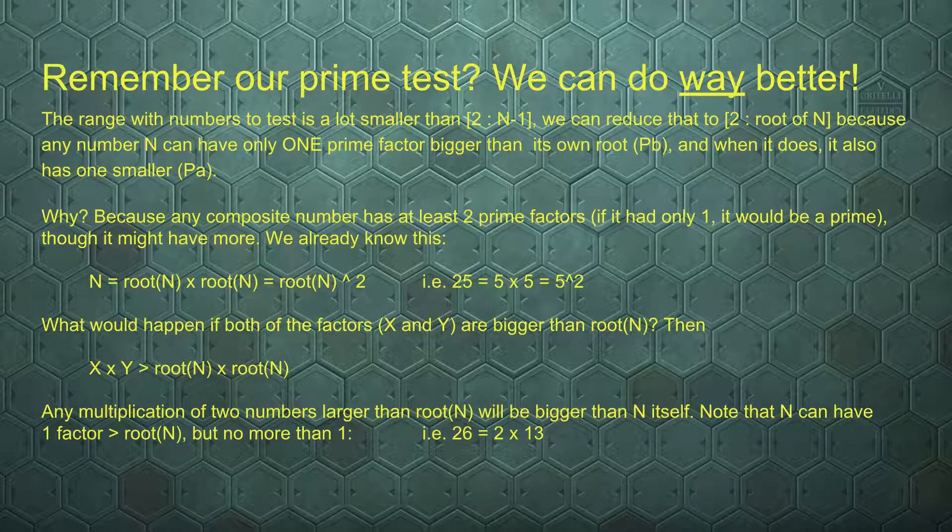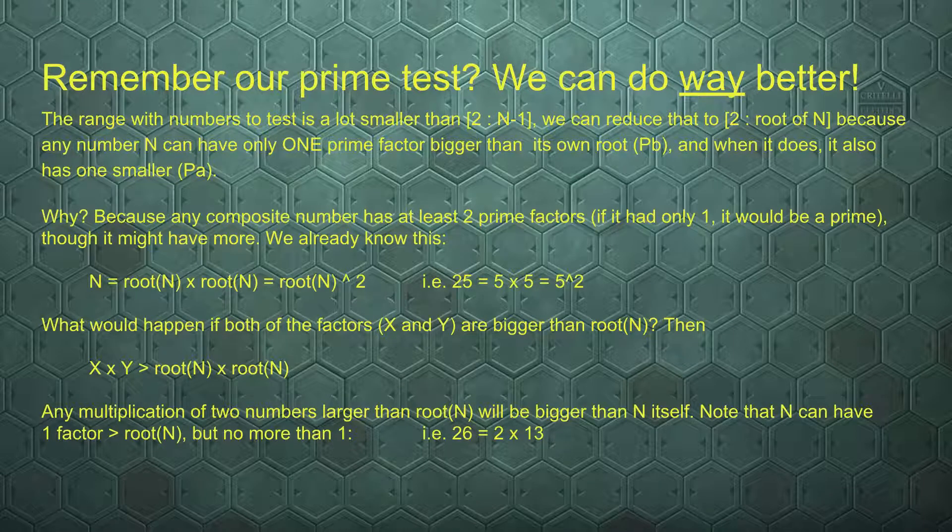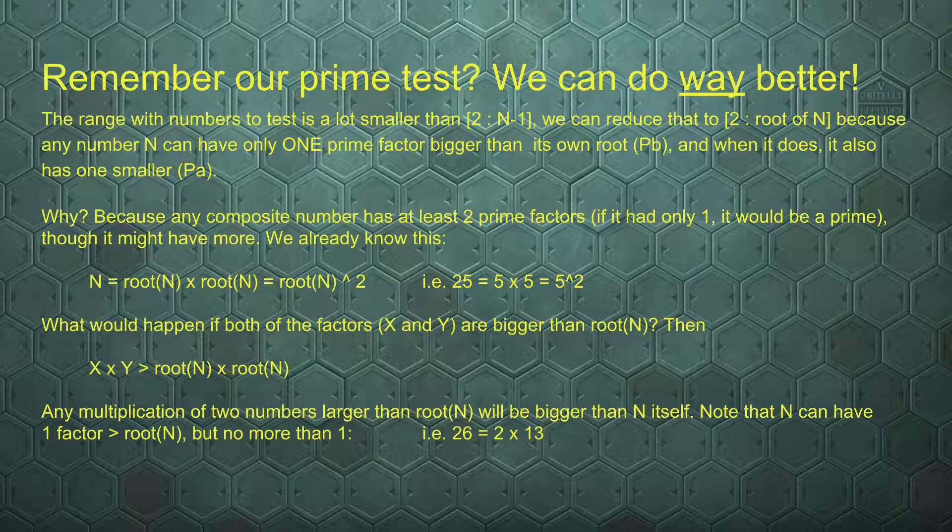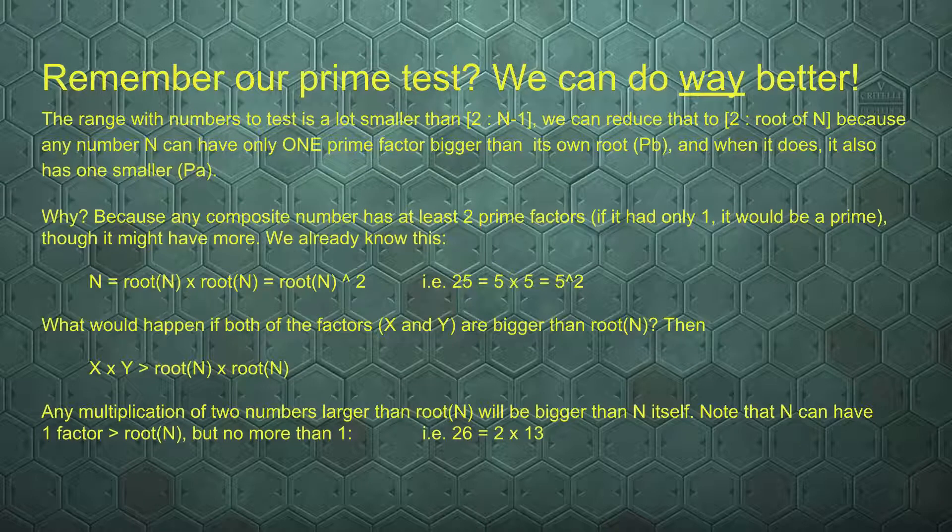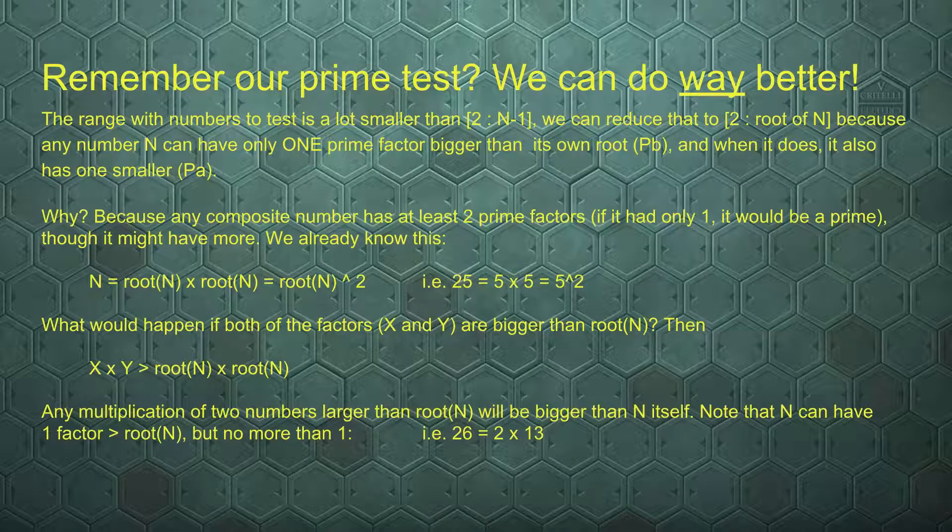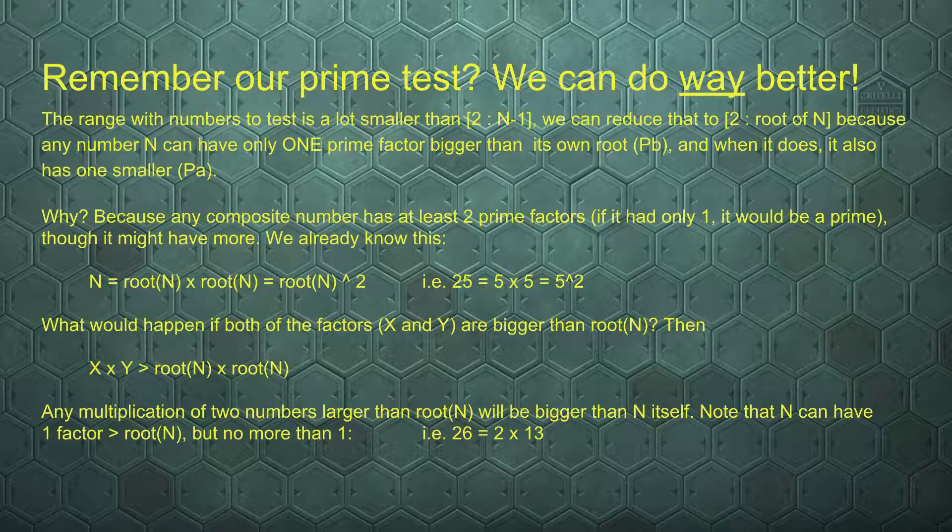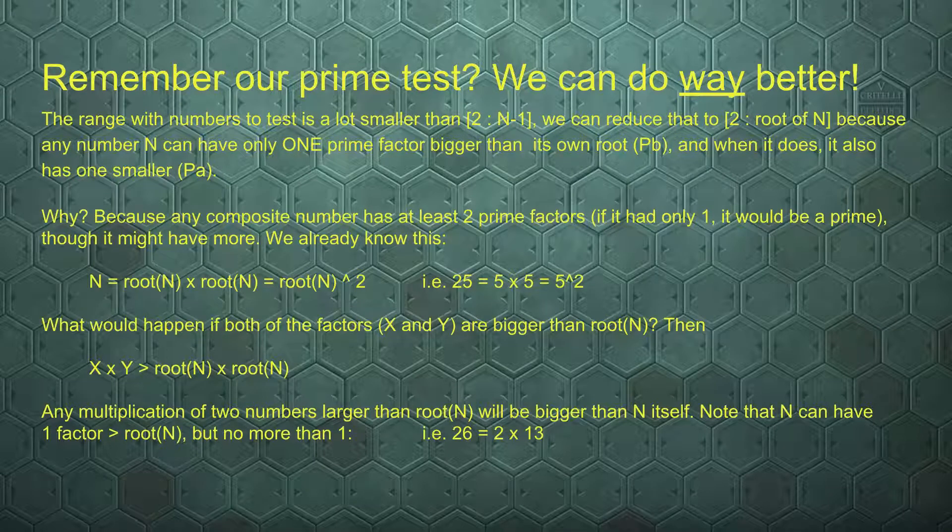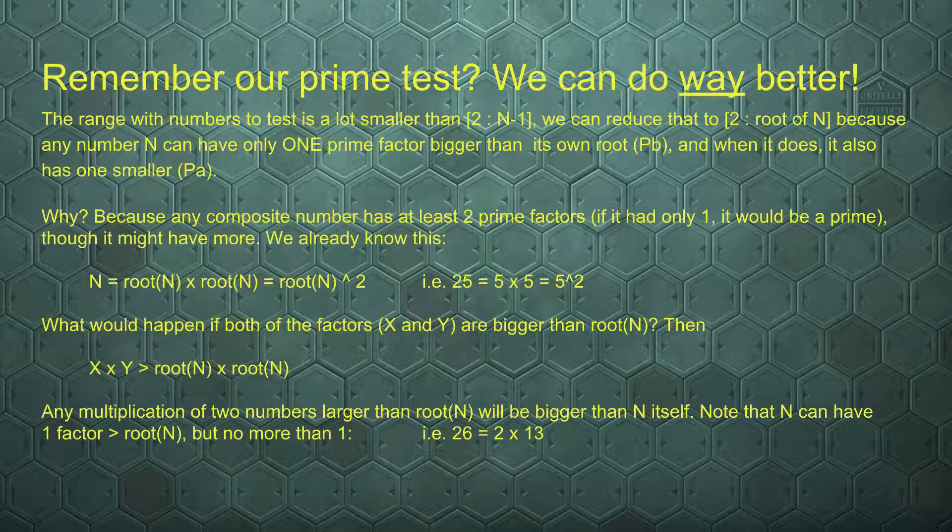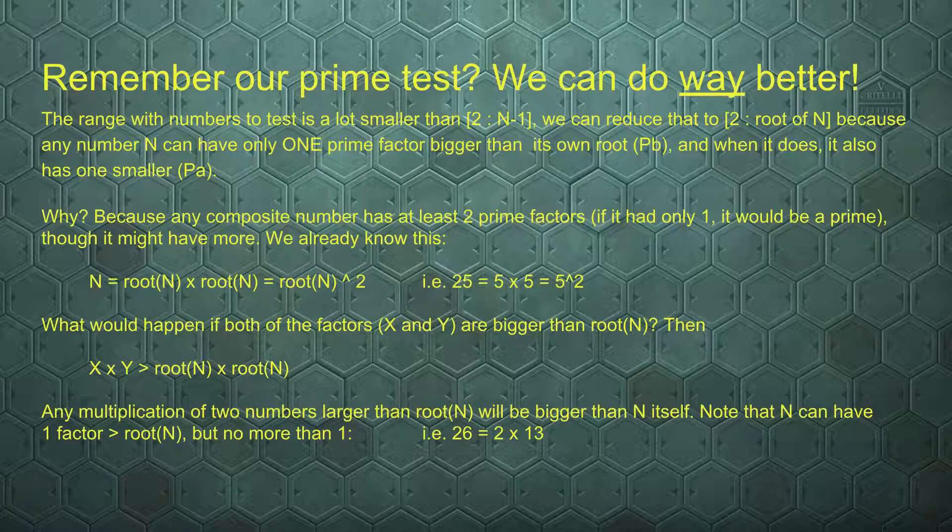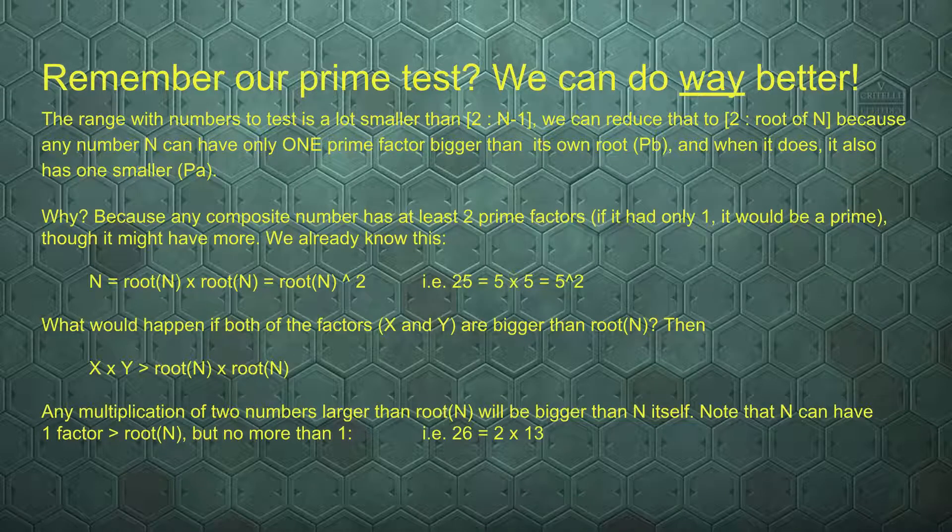Now, having looked at prime factorization, let's use that knowledge with testing if a number is prime. We did the trial division, taking all the numbers between 2 and 9 for n=10. That's quite a list, and we can do a lot better. We can reduce that list, we can reduce the upper limit to the root of n. Because any number n can have only one prime factor bigger than its own root, and when it does, it also needs to have a smaller prime factor.